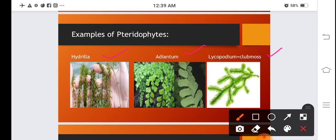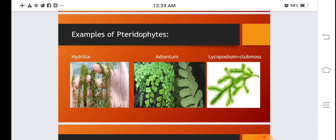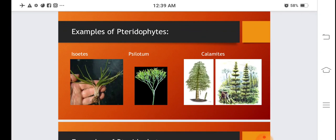Lycopodium is not a bryophyte but is a pteridophyte, but it resembles moss, so it is known as club moss. These are examples of pteridophytes: Hydrilla, Adiantum, and Lycopodium. Other examples of pteridophytes are Isoetes, Silatum, and Calamites.